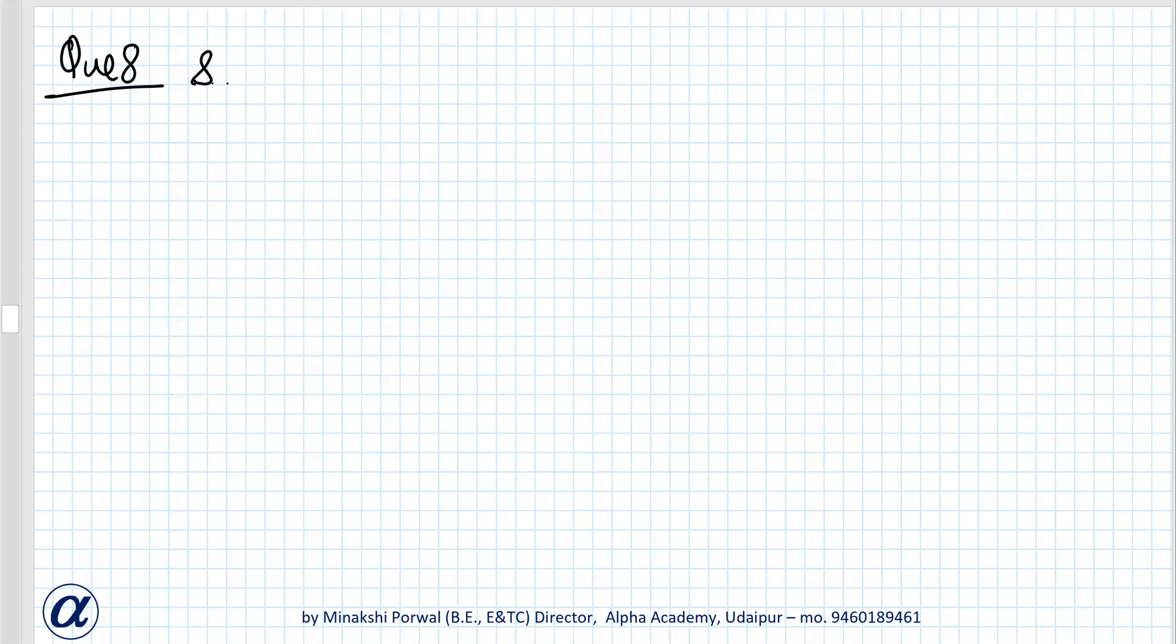Question 8 is show that the angles of an equilateral triangle are 60 degrees each.